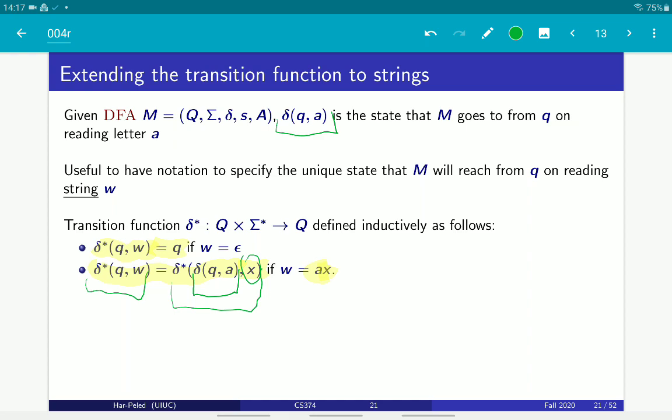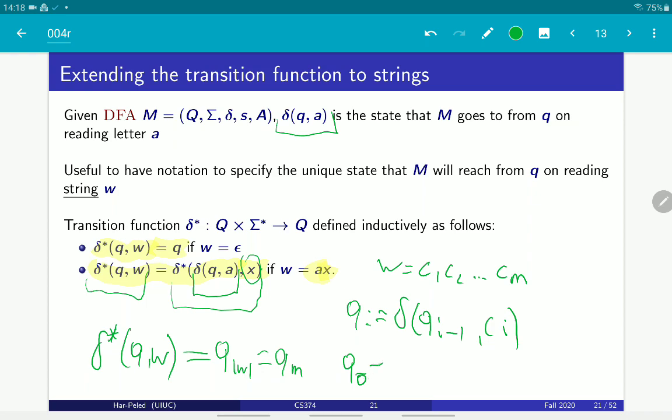If you want, you can think about it also as, if W is C1, C2 to CM, a string with M characters, then you can define QI to be as follows: delta of QI minus 1 of CI. So Q0 is, of course, just going to be the start state. Or in our case, since we are trying to compute delta star of QW, this is going to be equal to Q, the length of W, which in our case is QM.